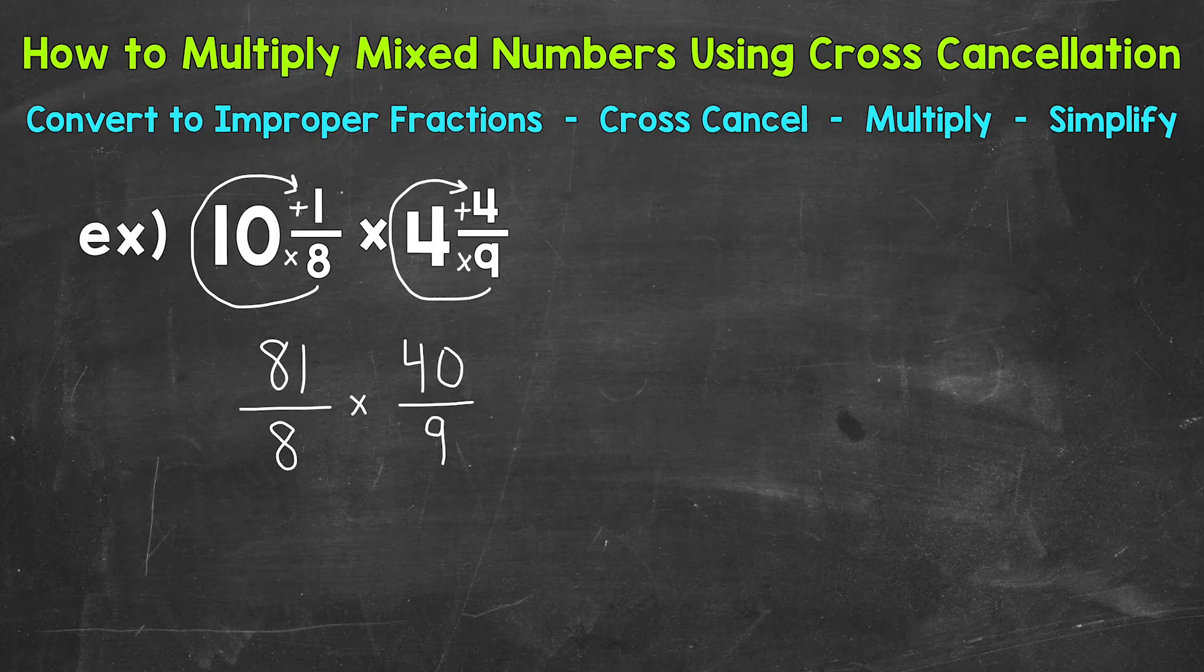So we have 81 eighths times 40 ninths. 81 eighths is equivalent to 10 and 1 eighth. It's just in the form of an improper fraction. And then 10 and 1 eighth is in the form of a mixed number. Both of those are equivalent. So when we convert to an improper fraction, we're not changing the value of anything. And then 40 ninths is equivalent to 4 and 4 ninths. Again, we did this, so we just have a numerator and a denominator and we are able to multiply.